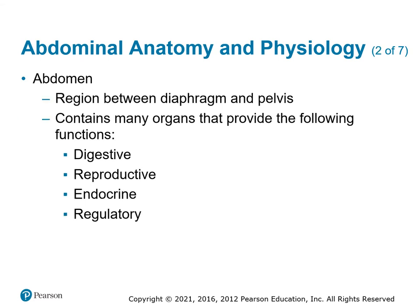The abdominal cavity is between the diaphragm and the pelvis, so it's a pretty good-sized body structure. It contains major organs for the digestive system, reproductive system, endocrine system, and regulatory functions — how we manage the functions of the body.